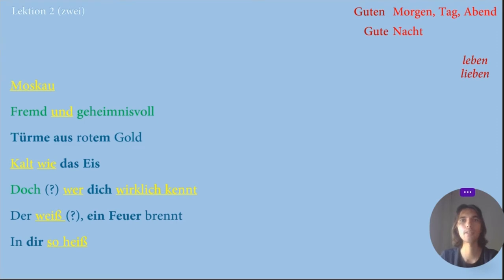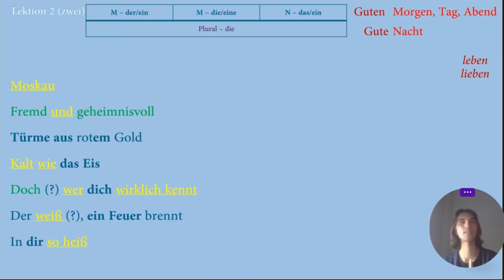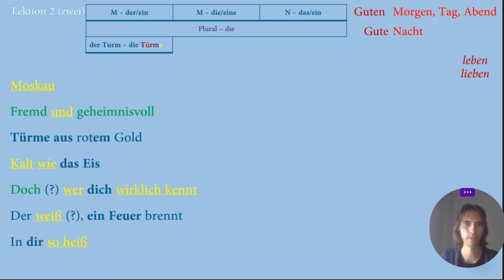Remember yesterday I learned that there are three genders. These are masculine articles Der and Ein, feminine Die and Eine, and neuter Das and Ein. I found that for plural there is only one article, which is Die. I tried to find singular and plural forms of nouns to identify some rules of plural and singular in German. I started with the word Turm — in singular Der Turm, so it is masculine, and Die Türme in plural. We add letter E at the end and change U in Turm to Ü.